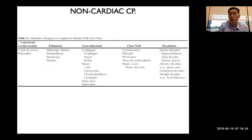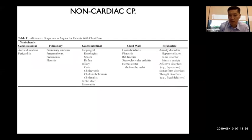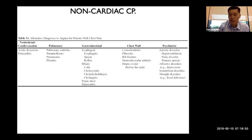Common non-cardiac causes of chest pain include GI causes like ulcer disease, reflux, and heartburn, which often mimic cardiac pain. Chest wall pain is also very common — sore ribs or muscles near the heart area cause a lot of worry, but it's often just costochondritis, or inflammation of the chest wall.